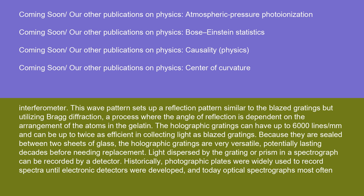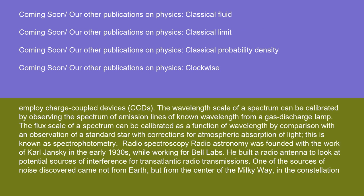Light dispersed by the grating or prism in a spectrograph can be recorded by a detector. Historically, photographic plates were widely used to record spectra until electronic detectors were developed, and today optical spectrographs most often employ charge-coupled devices (CCDs). The wavelength scale of a spectrum can be calibrated by observing the spectrum of emission lines of known wavelength from a gas discharge lamp. The flux scale of a spectrum can be calibrated as a function of wavelength by comparison with an observation of a standard star with corrections for atmospheric absorption of light. This is known as spectrophotometry.